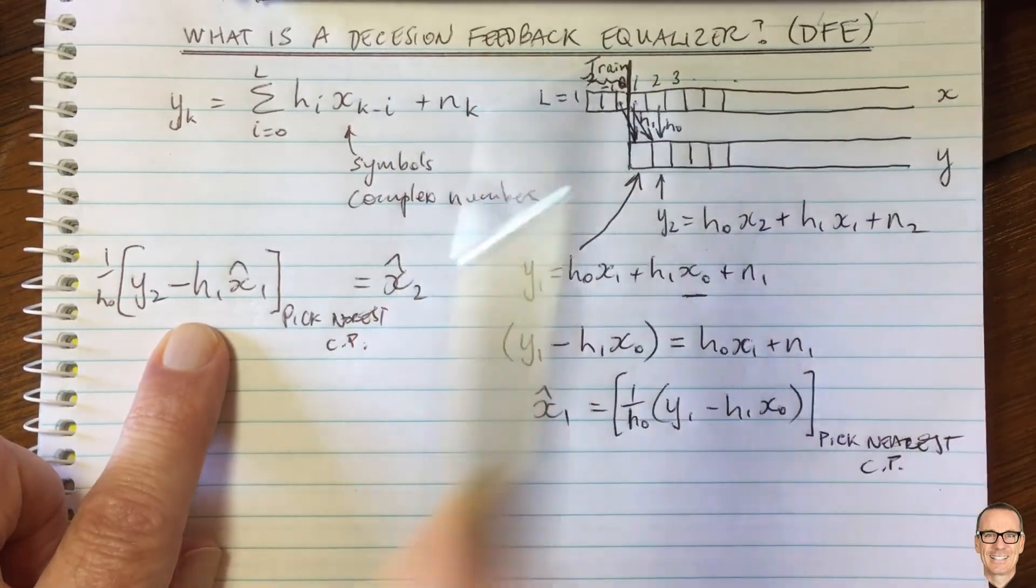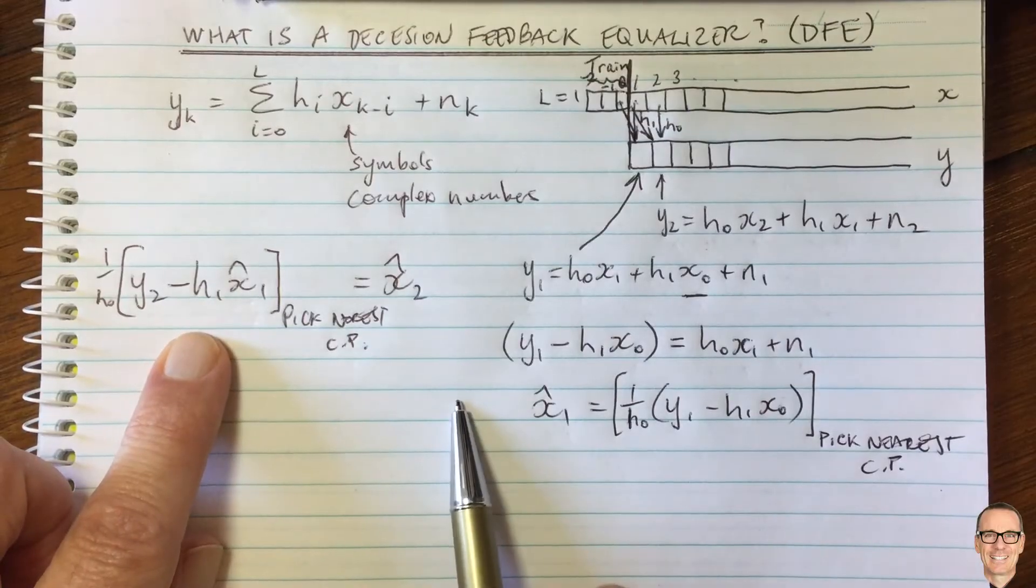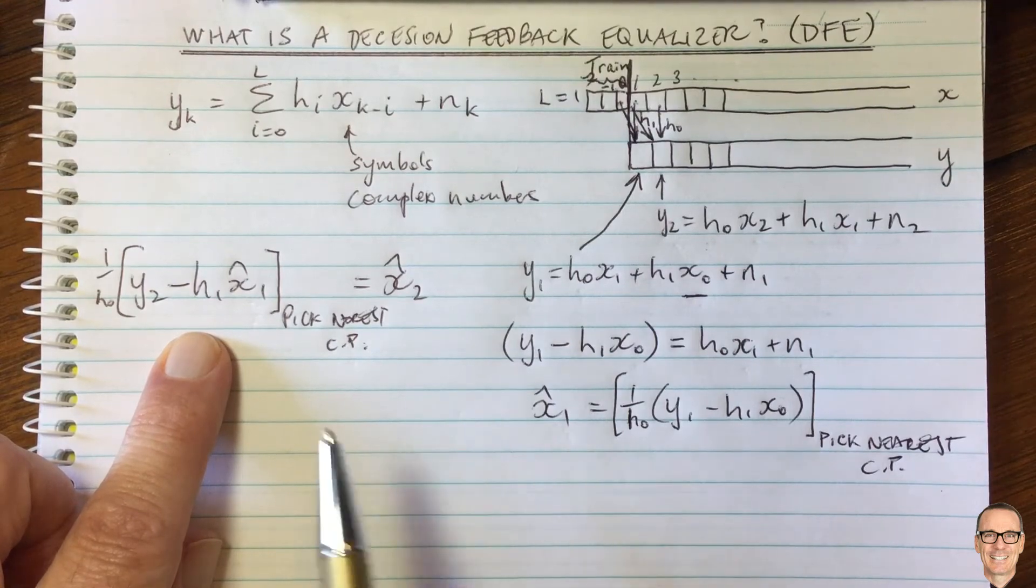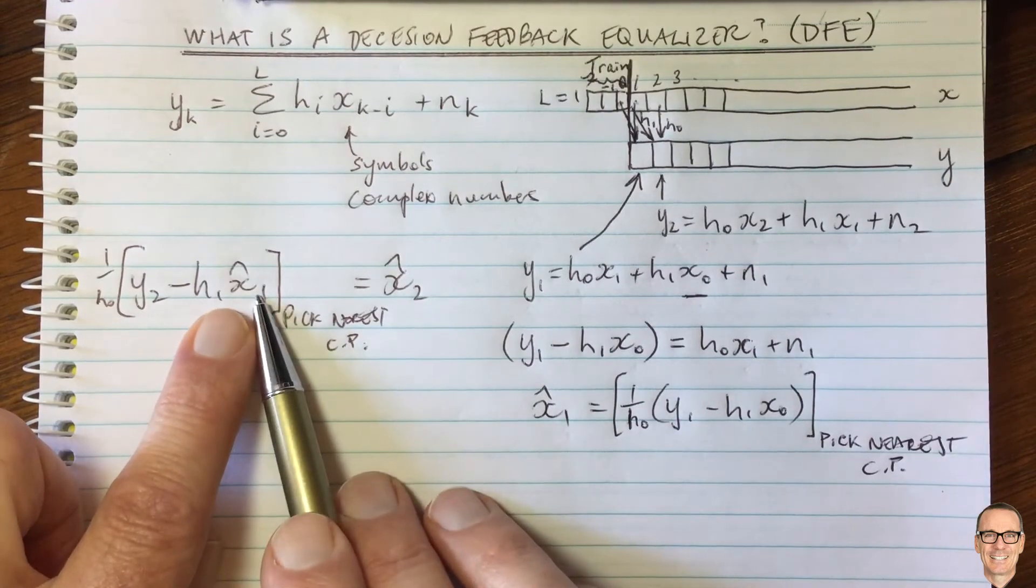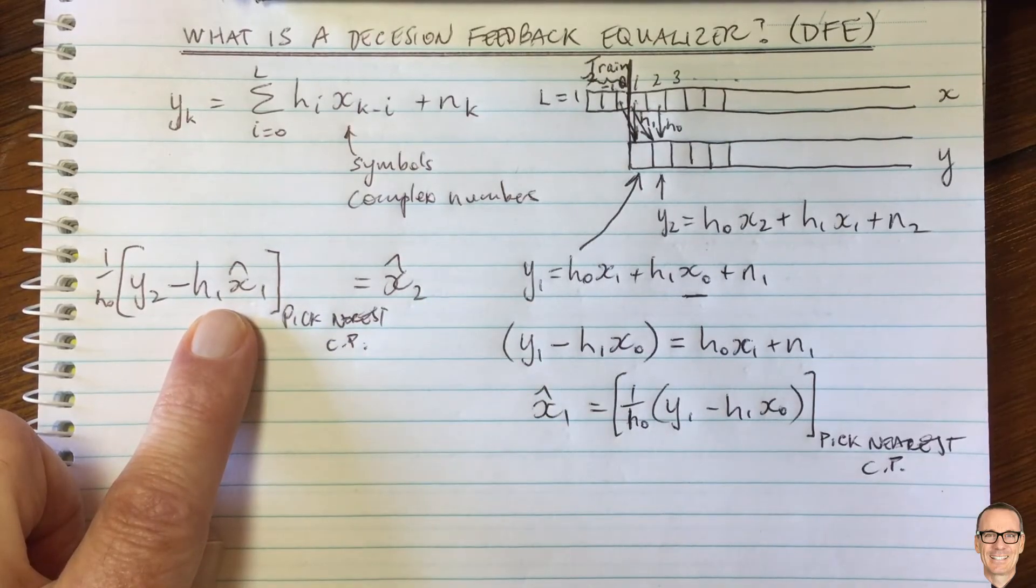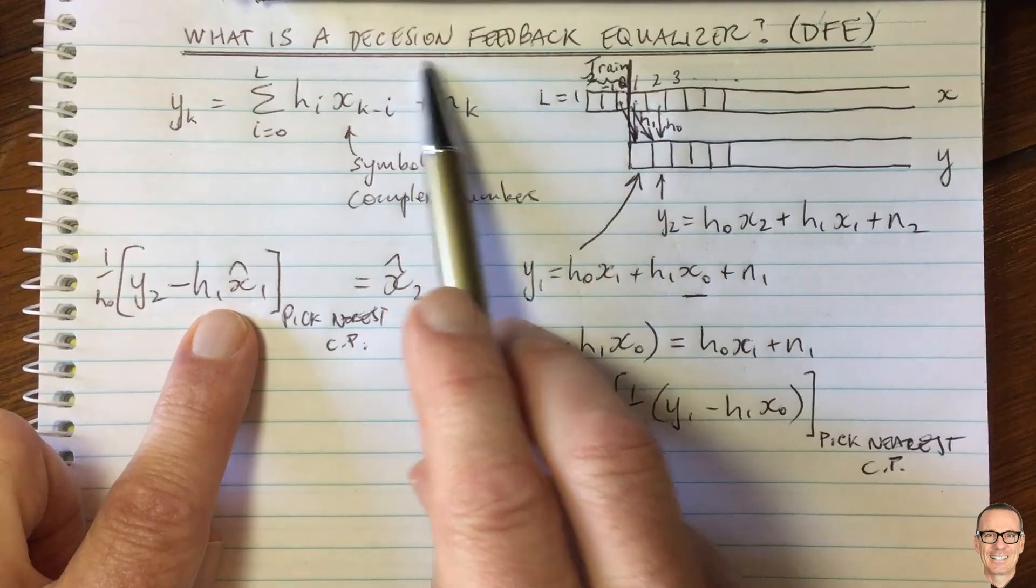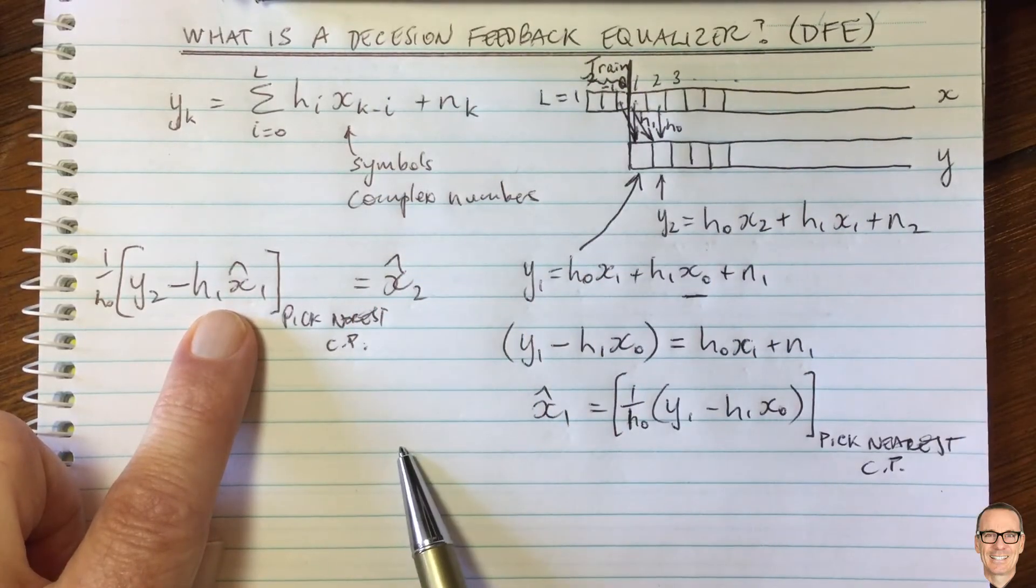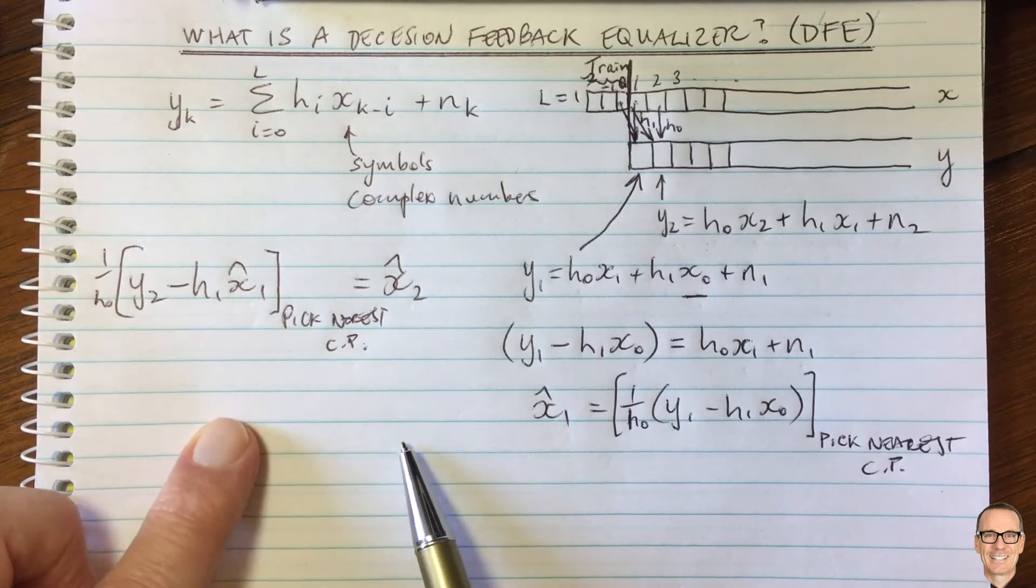So normally, you use decision feedback equalizers in situations of high signal to noise ratio. So if you have a good strong signal, high signal to noise ratio, then you can be very confident of making the right decisions, then you can be confident of feeding them back and continuing to make the right decisions. And one good aspect of this, particularly attractive of the decision feedback equalizer, is how simple it is to implement. So it has low computational complexity for implementation.